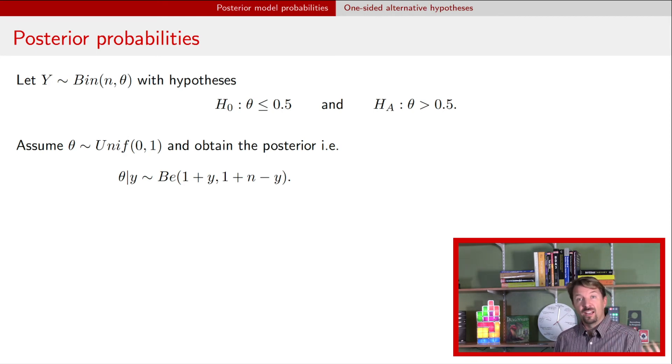Now we've got a full posterior, now we can just calculate the areas under the curve left of 0.5 and right of 0.5 to get our two probabilities. So for the null hypothesis it's the area left of 0.5, for the alternative hypothesis it's just 1 minus that.